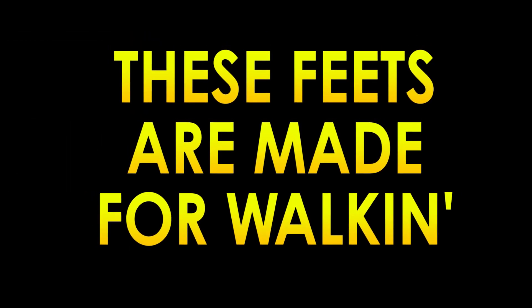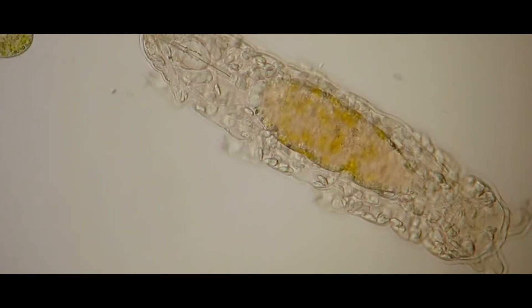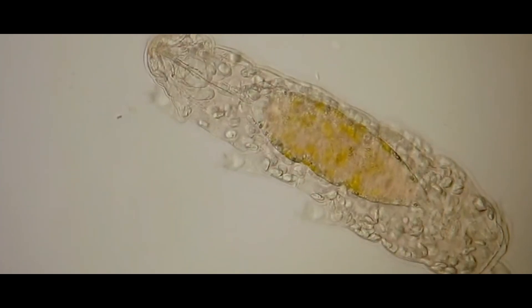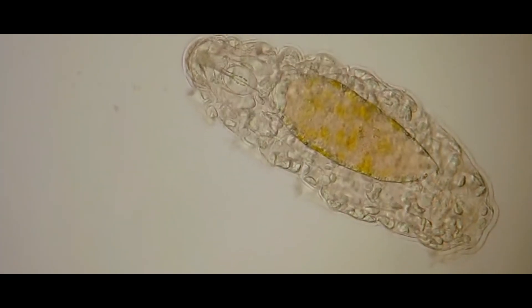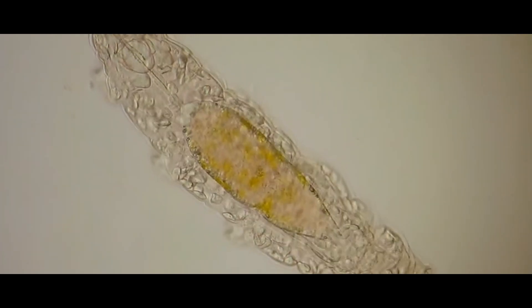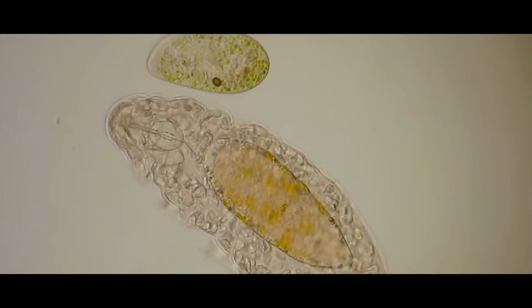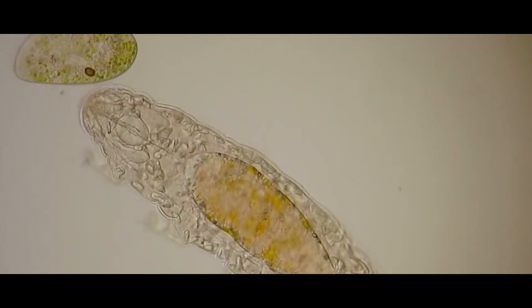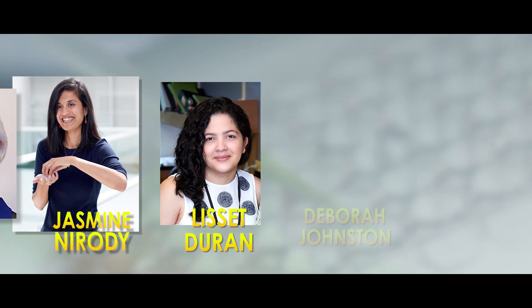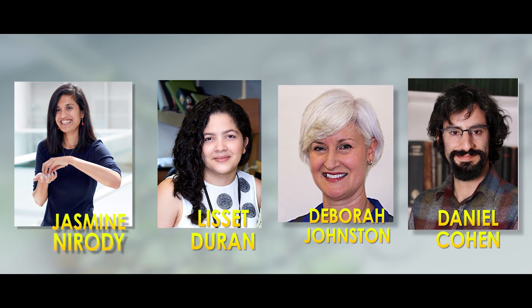These feet are made for walking. The tardigrade's claim to fame is their intense resilience to virtually all forms of violent bombardment. Despite that, the first observations of the little microbeasts during the 18th century centered around their movement. They slowly lumber around like big fat bags of jello. It's what earned them their nickname of water bear. A paper by Jasmine Nirody, Lisset Duran, Deborah Johnston and Daniel Cohen published March of 2021 looked to further expand upon the understanding of the mechanisms behind the locomotion of the tardigrade.